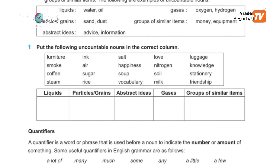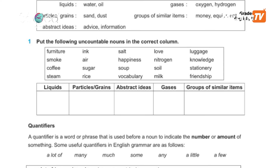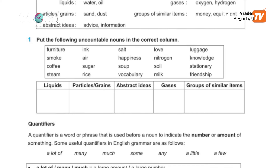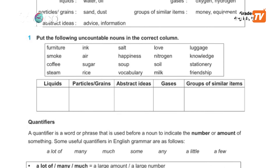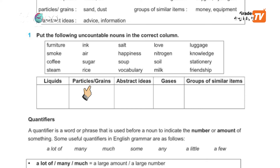Put the following uncountable nouns in the correct column. The columns are: liquids, particles or grains, abstract ideas, gases, and groups of similar items.